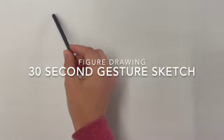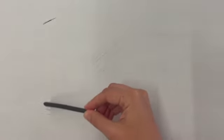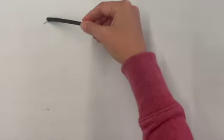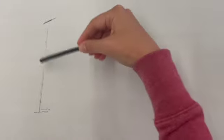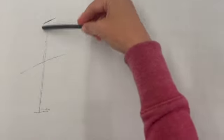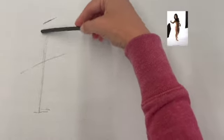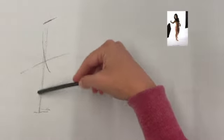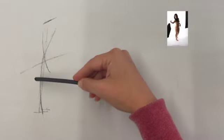We'll be doing a variety of different poses today starting first with just 30 second gesture sketches. A gesture sketch is a drawing that focuses on capturing the movement of the figure rather than the exact proportions or muscular details. You can almost think of it as a drawing that starts to capture the skeleton or where the weight and movement is being distributed within the figure.